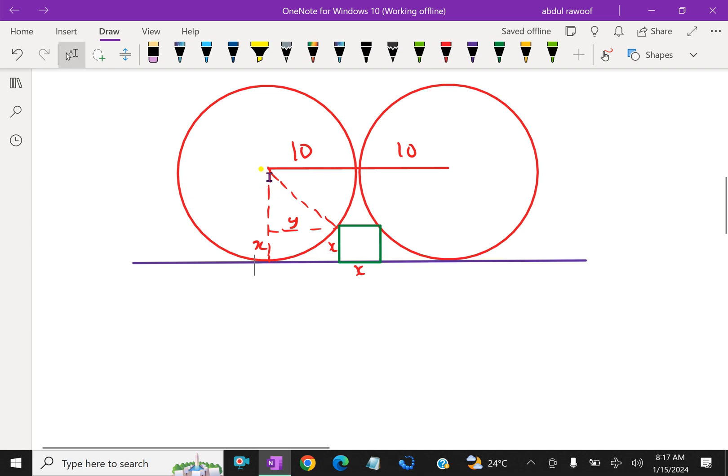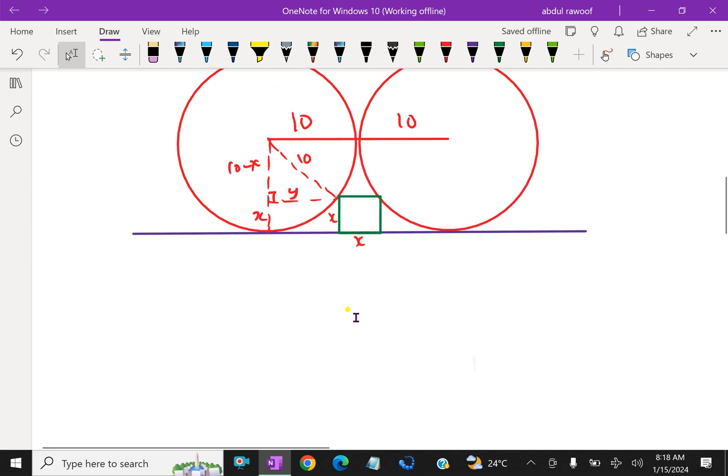Now from this geometry, here this is also a radius, so this is 10. Now here this is x, this is also a radius, so this is 10 minus x. Now look at this right triangle, we have sides 10 minus x, y, and 10 by using Pythagoras.